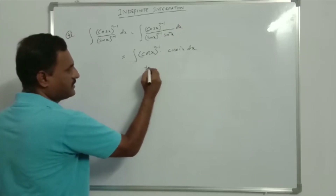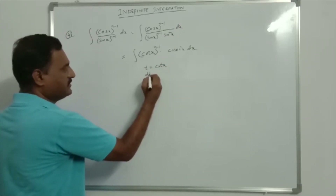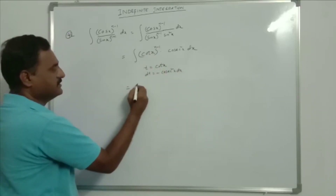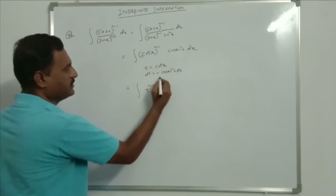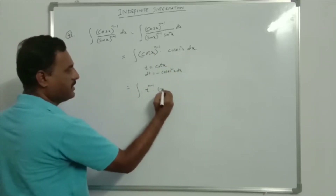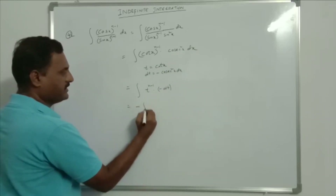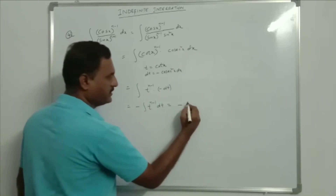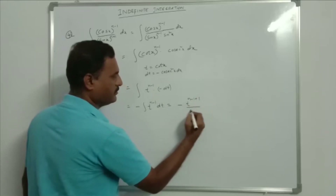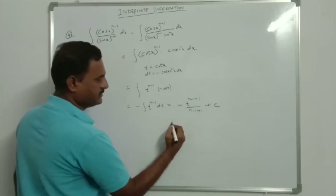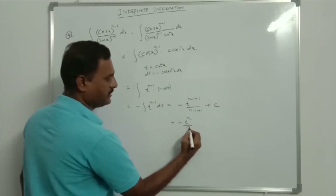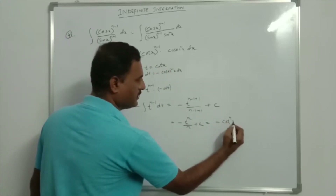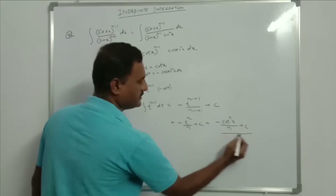Let t = cot x, so dt = -cosec²x dx. Substituting, we get integration of t^(n-1) · cosec²x dx = -dt. That is equal to minus integration of t^(n-1) dt. That is equal to -t^(n-1+1)/(n-1+1) + c, which is -t^n/n + c. Substituting t = cot x: the result is -cot^n(x)/n + c.